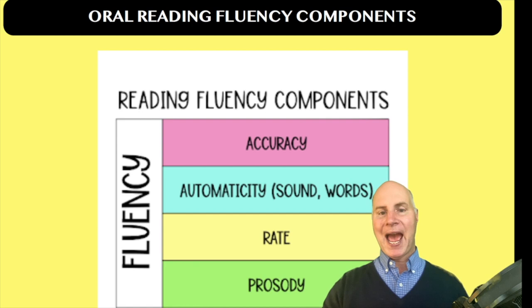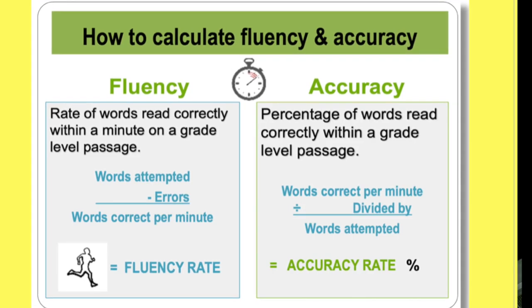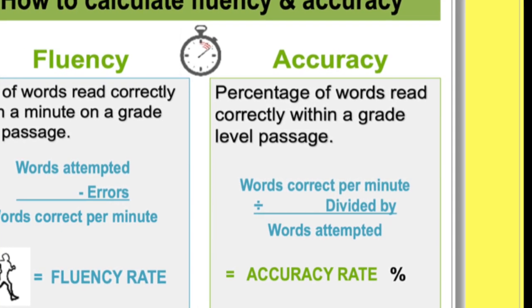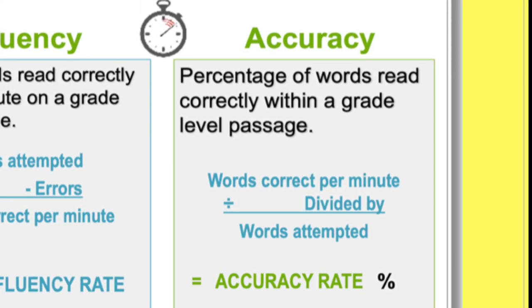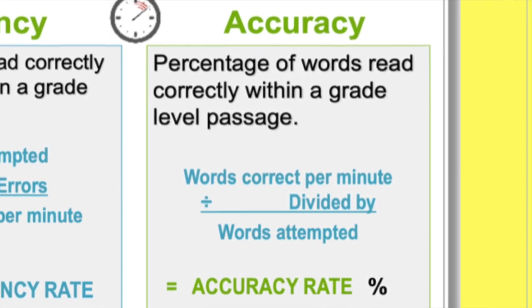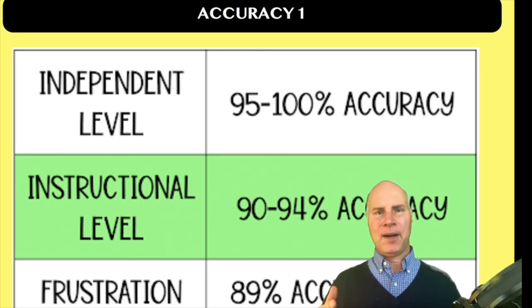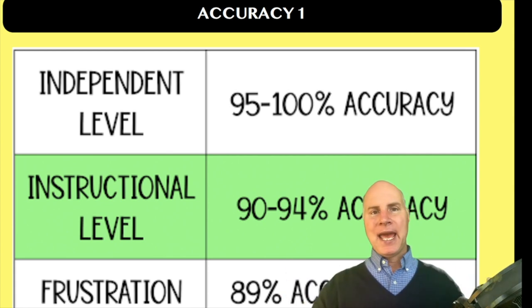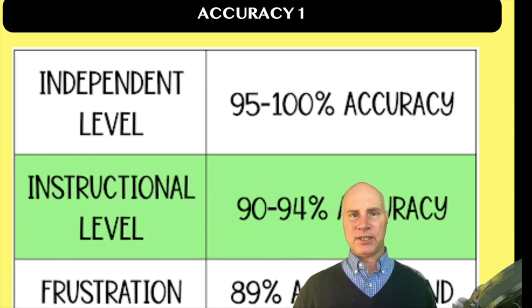Let's look at the first one, accuracy, a little closer. Thinking about what is accuracy. Accuracy is the amount of questions the student gets correct over the total amount of questions or words that they had to read. So it's usually a percentage of what they got right over how much they had to read. And it's always a percent.